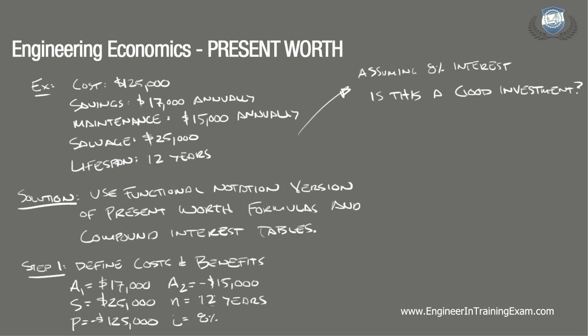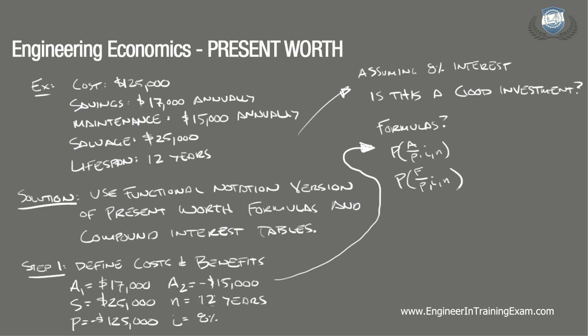The next step is to determine the desired rate of return. In this problem we are given an interest rate of 8%. We now need to determine which present worth formulas we need to solve this problem. We have three items to convert to a present worth: one annual cost, one annual benefit, and a future cost. Therefore, referencing the table on page 114, we will use the uniform series present worth formula P = A × (P/A, I, N), and the single payment present formula P = F × (P/F, I, N).